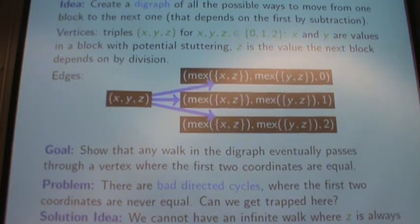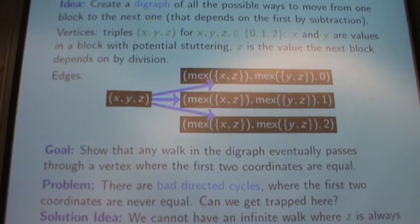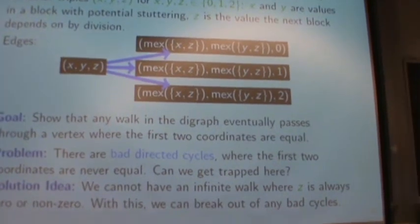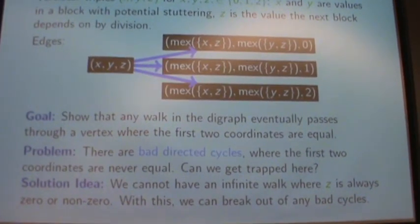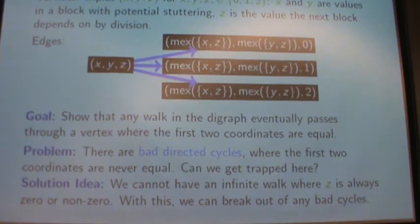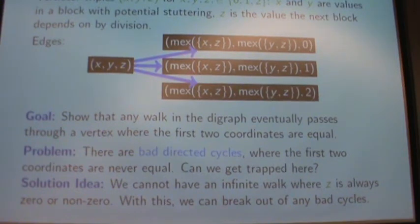There's still a fairly limited number of vertices and edges. One neat thing about this graph is that it's fairly small — I'm looking at triples in {0, 1, 2}, so I only have 27 vertices. You can really look at this thing and write it all down. What we'd like to show is that any walk in this digraph is eventually going to reach a point where x and y have the same value, which corresponds to any set of initial blocks eventually getting to a place where stuttering occurs. We know that if stuttering occurs, it persists — so it's basically a peg in a hole.